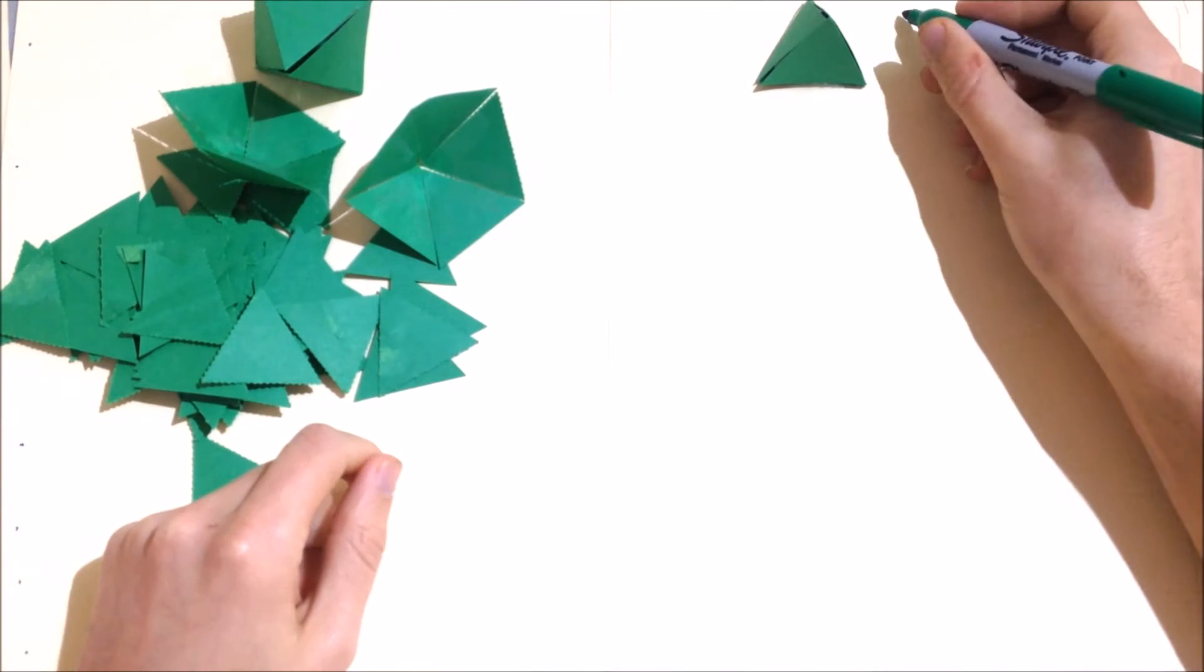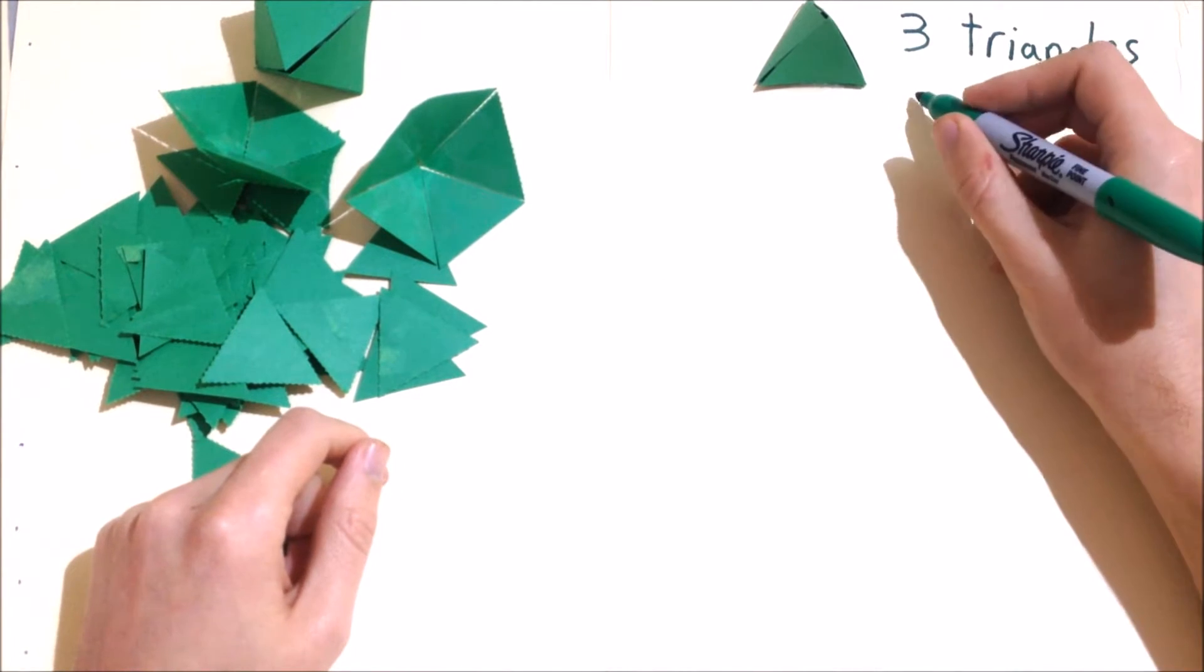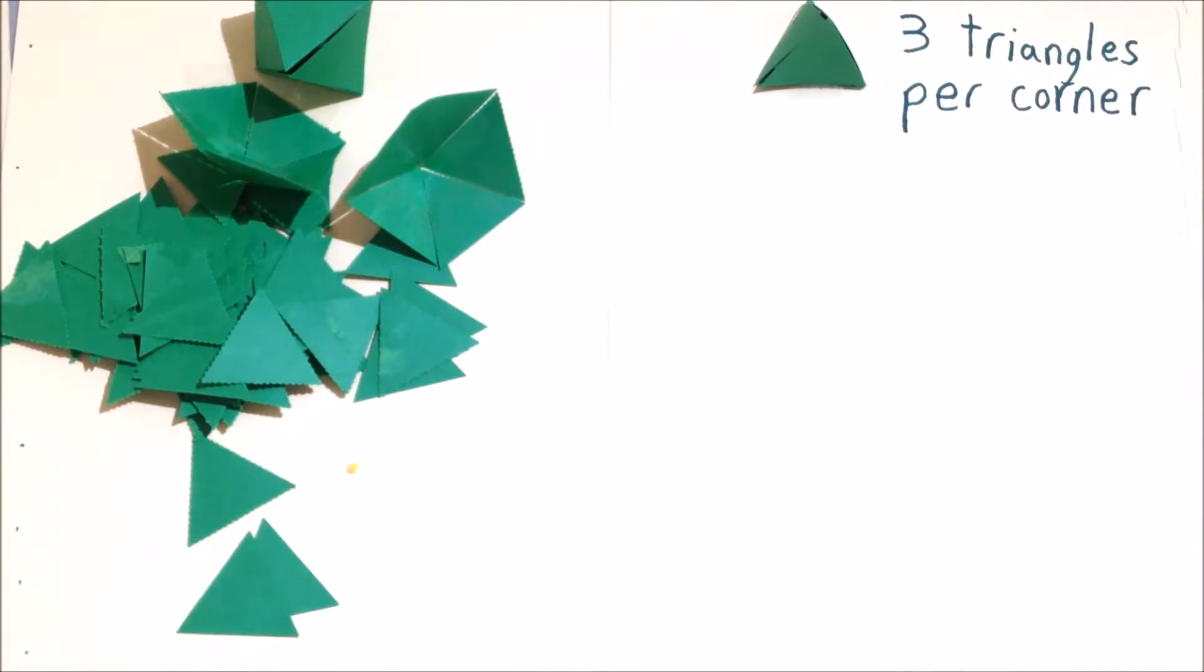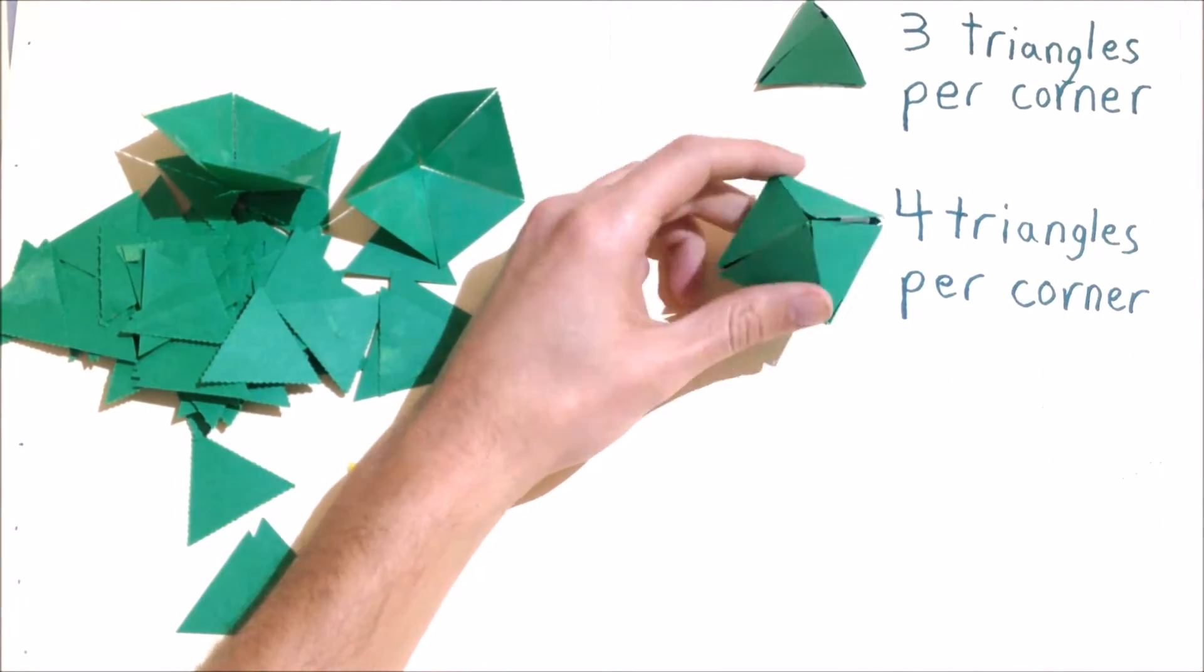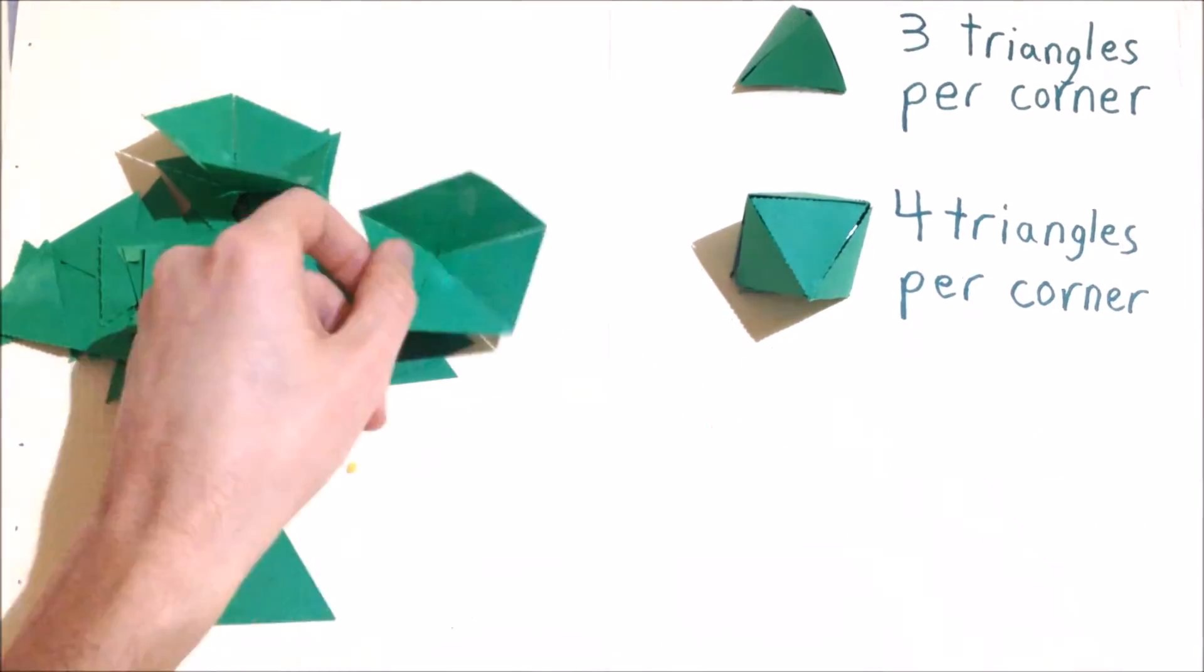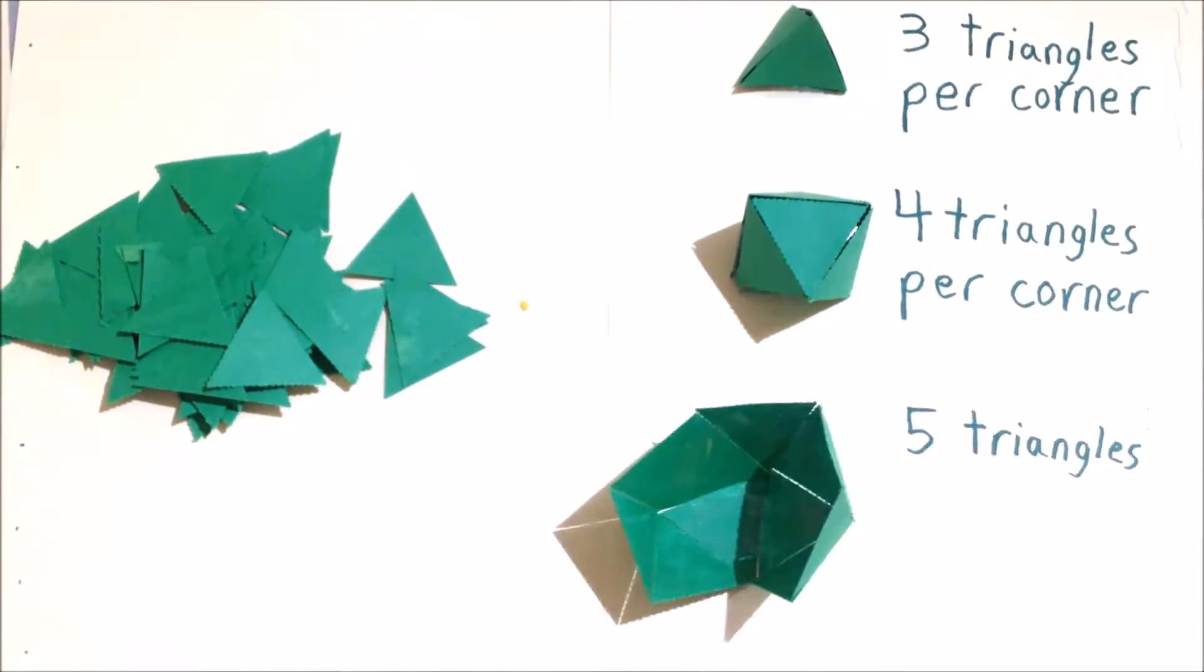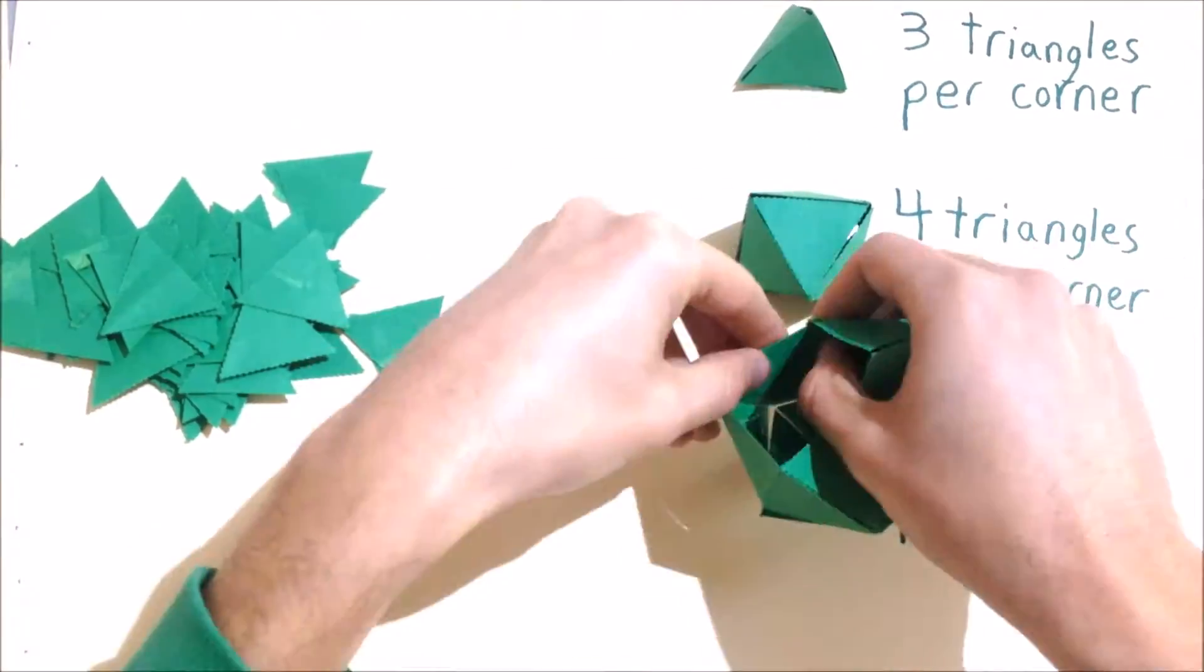My first shape is all triangles, and each corner has three triangles around it. My second shape is all triangles, and each corner has four triangles around it. This new shape is all triangles, and each corner has five triangles around it.